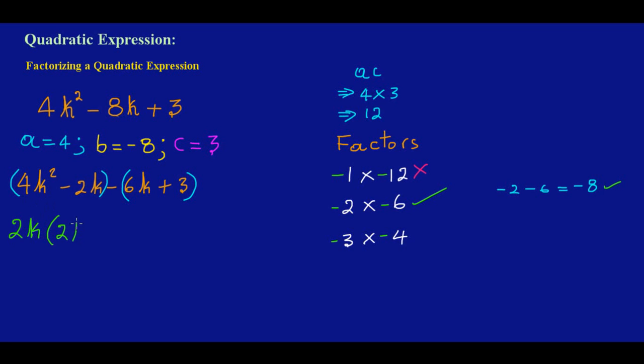I'm going to say 2 into 4 goes 2 times, so I can put down that 2, and k into k² will leave me with k, and 2 into negative 2k will go negative 1. Now there's a sign here I have to take it down, and I'm going to ask myself what is common to 6k and 3 - I will have a 3 there. I'm going to say 3 into a negative - 3 into a negative 6k will give me a positive 2k, and a negative 3 into a positive 3 will give me a minus 1.